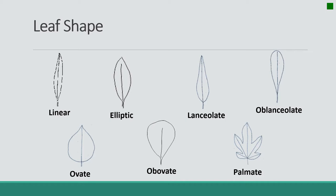And then we have a palmate leaf shape, where the leaf's veins are all coming out of a single point near the base of the leaf, and we see this palm-like appearance — it looks like a hand.